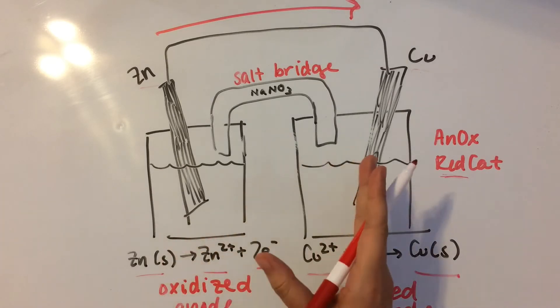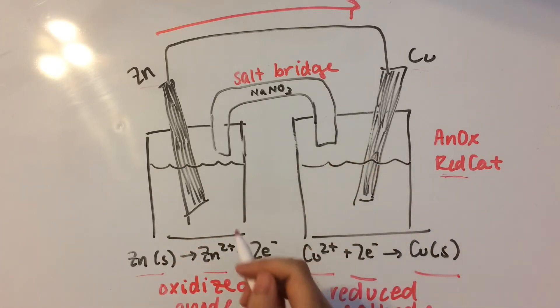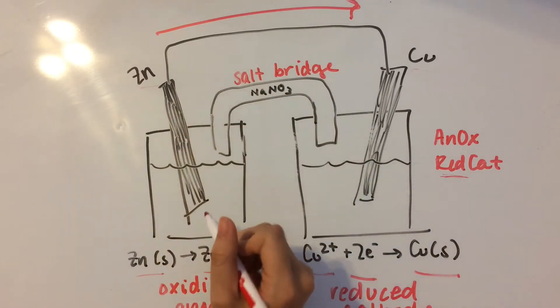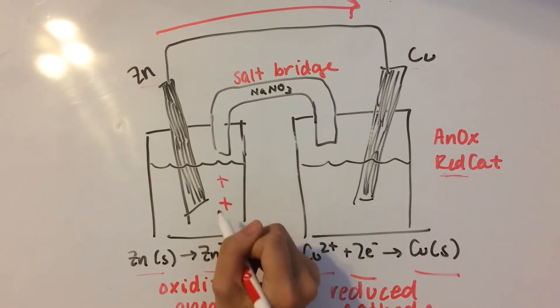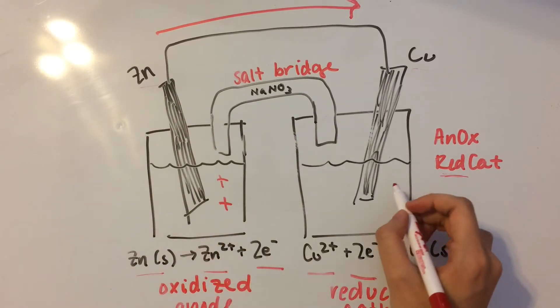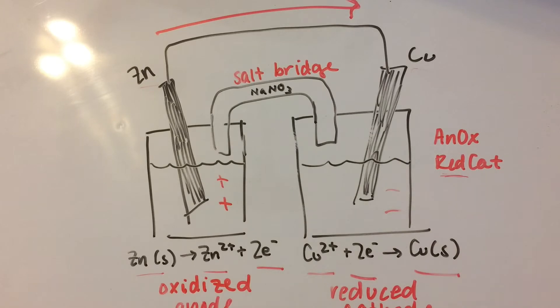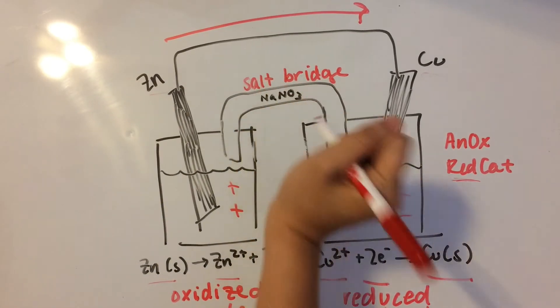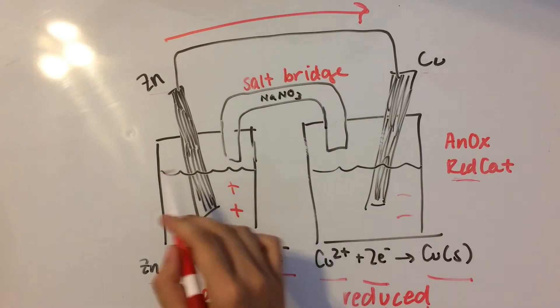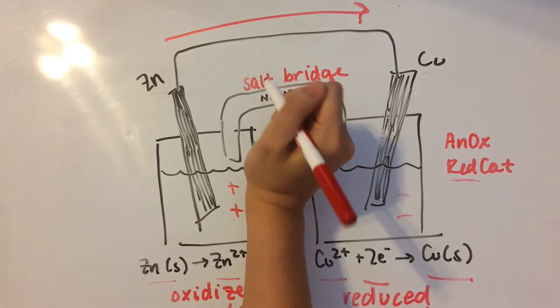So, this is going to create a buildup of charges because zinc is losing electrons. So it's going to become more positive on this side. Meanwhile, over here, it's going to become more and more negative. And we don't want that. So, what we do is we put a salt bridge in to balance out the charges that build up.